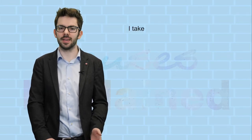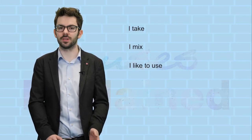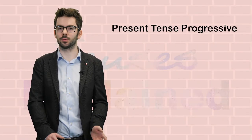In this case, Kate used the present simple when talking about a recipe. For example, she said I take, I mix, I like to use, and so on. However, there's also a second form, which is the present progressive tense.